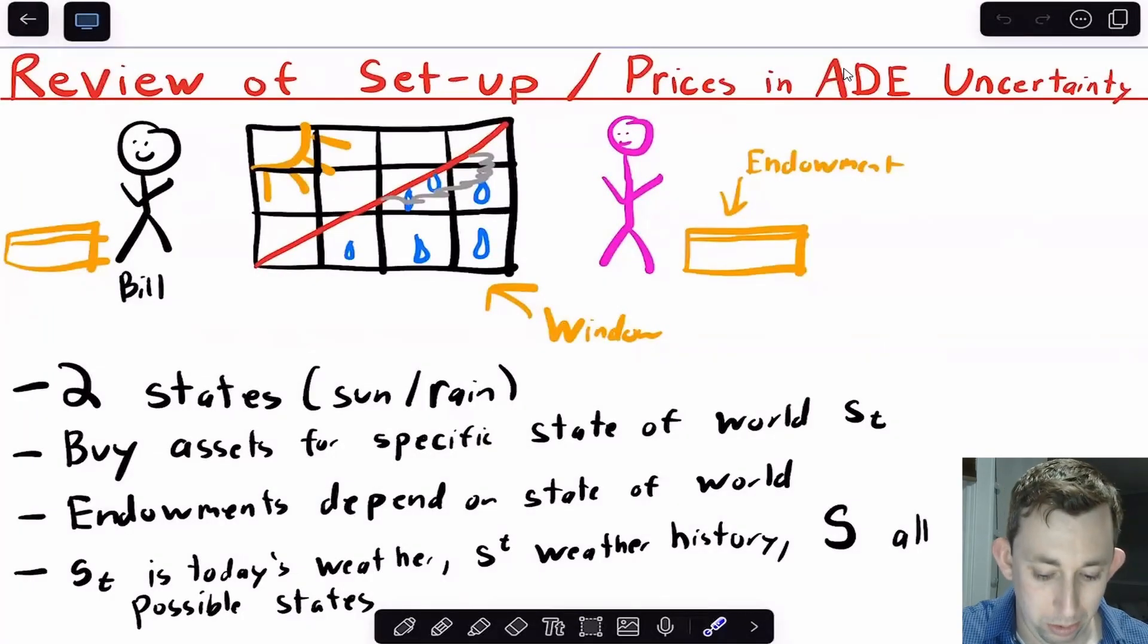And just to help us really remember what's going on with this Arrow-Debreu Equilibrium with uncertainty, you've got people living in this world. They have an endowment that shows up on their doorstep every day. And so what we had is that there are different states of the world, and so each good in a different state of the world is basically separate goods. And so to use a very simple example, we talked about weather. So we said that you can look outside your window and it's either going to be sunny outside or it's going to be raining. Those are going to be the two states of the world.